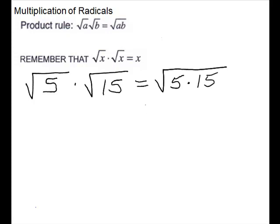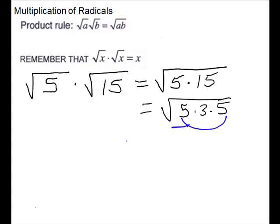So we can break down the 15. We have a 5, and 15 is 3 times 5. Now, if you have two copies of anything, that is a square. So you could take one outside for that group, and the 3 is left. That will simplify your radical, rather than going to 75 and then breaking it all down.